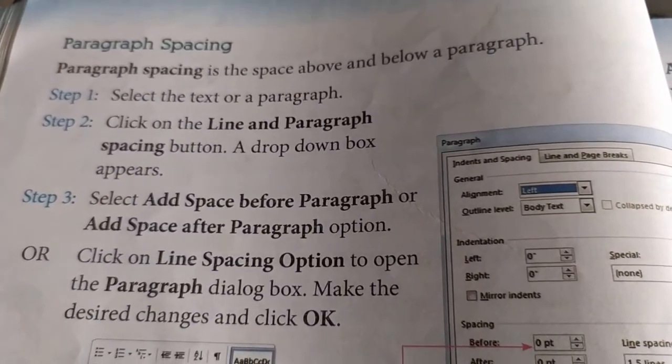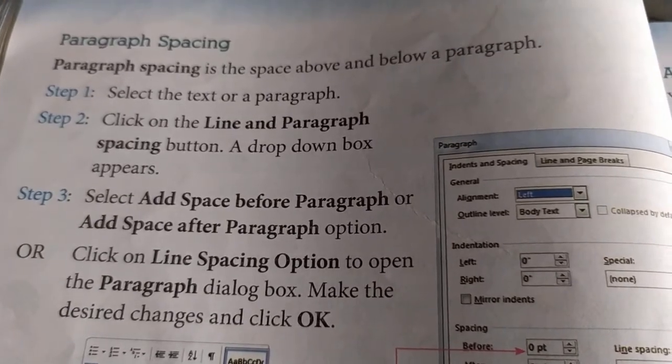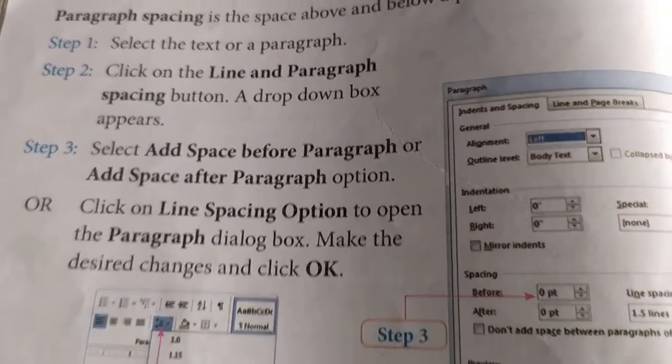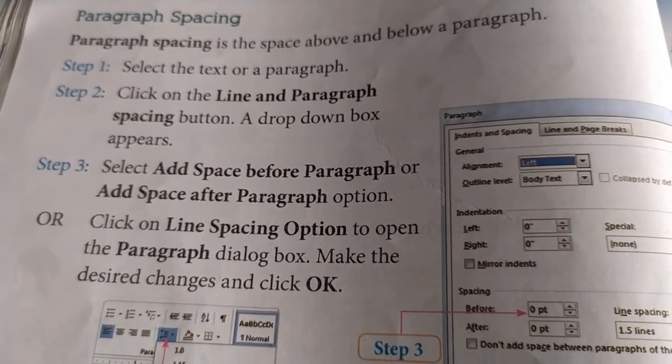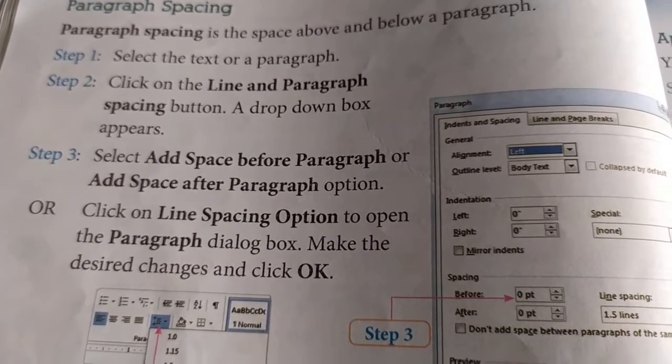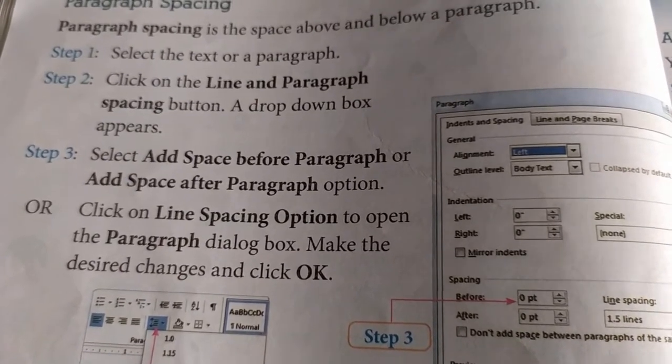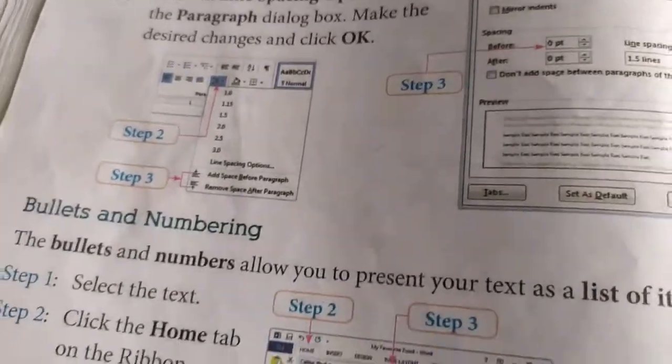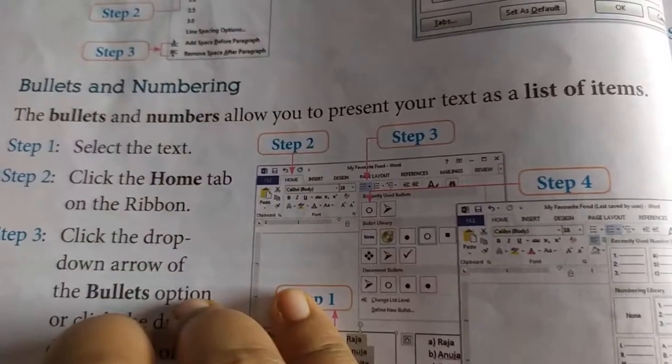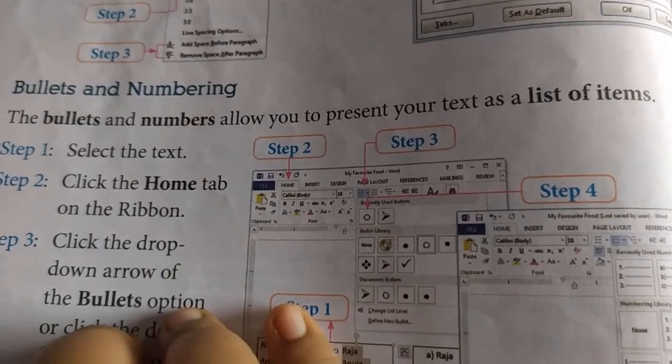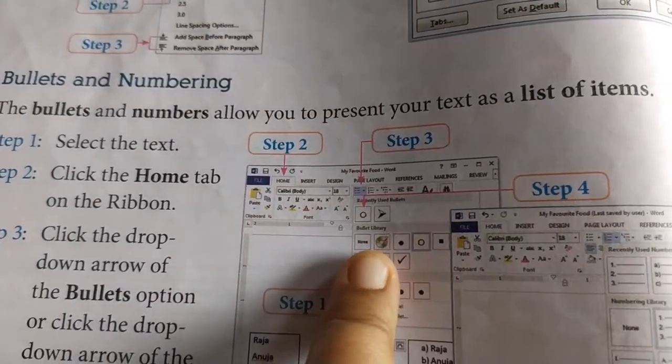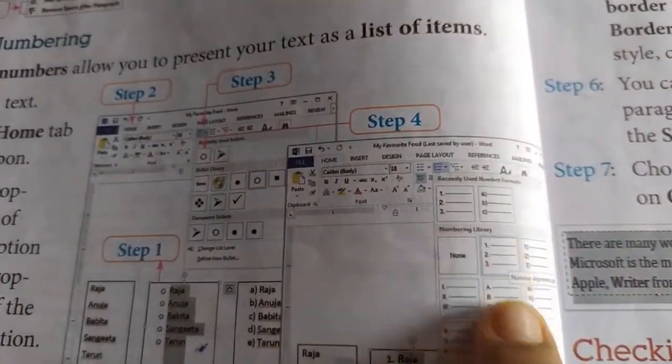Paragraph spacing is the spacing above and below a paragraph. Now if there are two or more paragraphs, then paragraph spacing will decide how much space it will give below and above a particular paragraph. Next, we have the bullets and numbering. It allows us to present our data in a list of items.